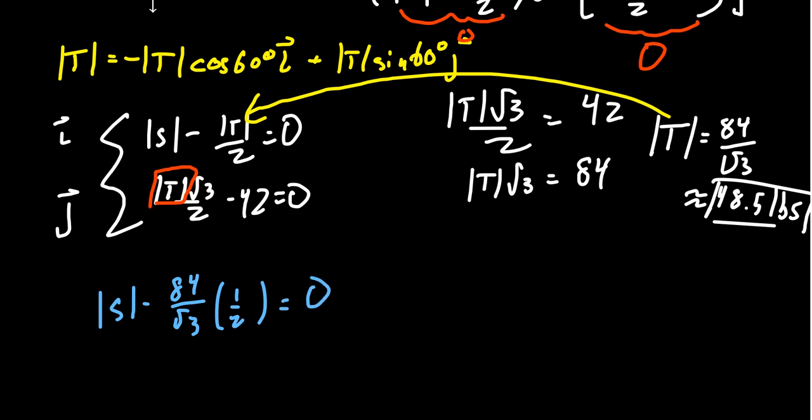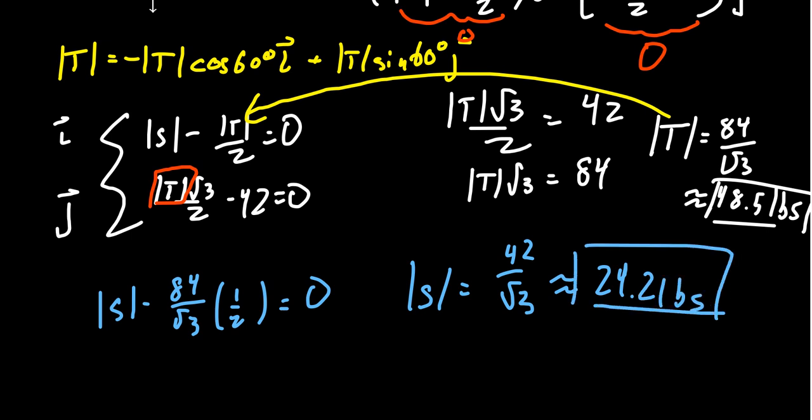Well, 2 goes into 84, of course, 42 times. So we end up with S is equal to 42 over the square root of 3. You can rationalize the denominator if you feel so compelled to do so. I won't worry about that. It's just half of the value there. We're going to get 24.2 pounds of force. And so this was equal to the force we found previously for Stacy.